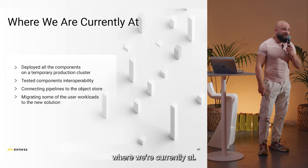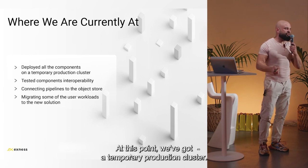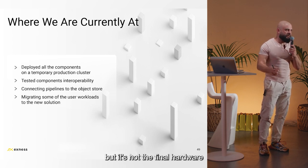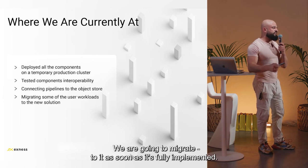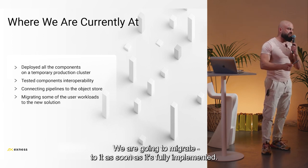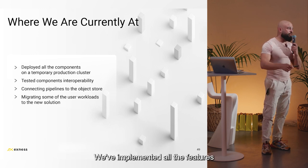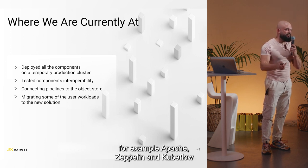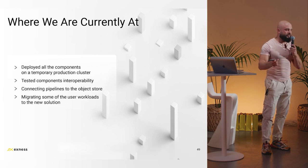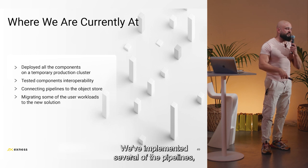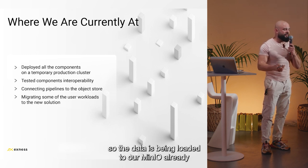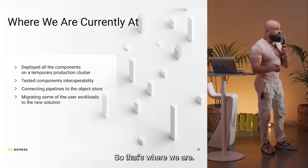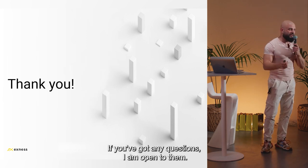Moving to the final stage — where we currently are. We have a temporary production cluster. By 'temporary production' I mean it's supposed to be production, but it's not the final hardware — the final hardware is on the way and we'll migrate as soon as it's fully implemented. We've implemented all the features and components discussed, and some not covered here such as Apache Zeppelin and KubeFlow. Several pipelines are in place, data is already being loaded to our MinIO, and we are migrating some workflows to the cluster. Thanks for the attention, I'm open to questions.